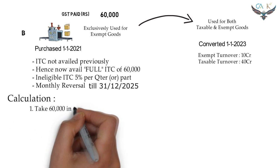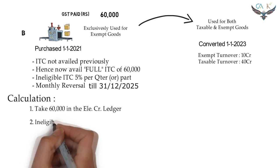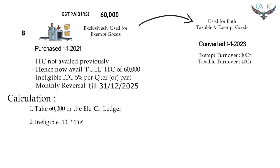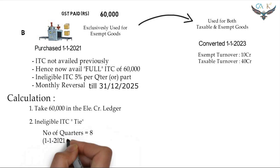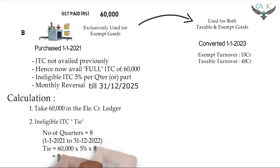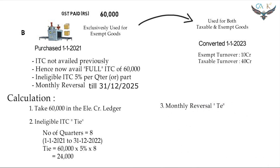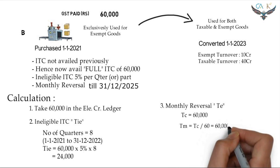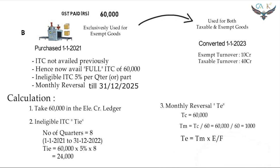First, take the full ITC of the common capital asset and credit it in the electronic credit ledger. Second, calculate the ineligible part TIE — the ITC pertaining up to the period of conversion. The number of quarters between 1st January 2021 and 31st December 2022 is 8, and the ineligible ITC is calculated at 5% for each quarter or part thereof. Finally, for the monthly reversal part, TC is the GST paid on the common capital asset, TM = TC ÷ 60, and TE = TM × (exempt turnover ÷ total turnover).